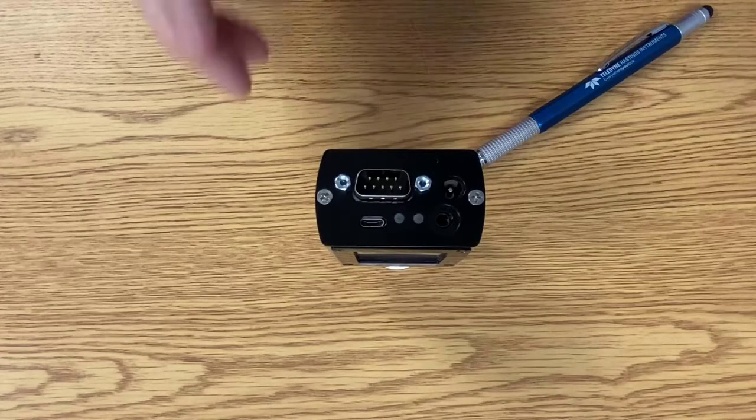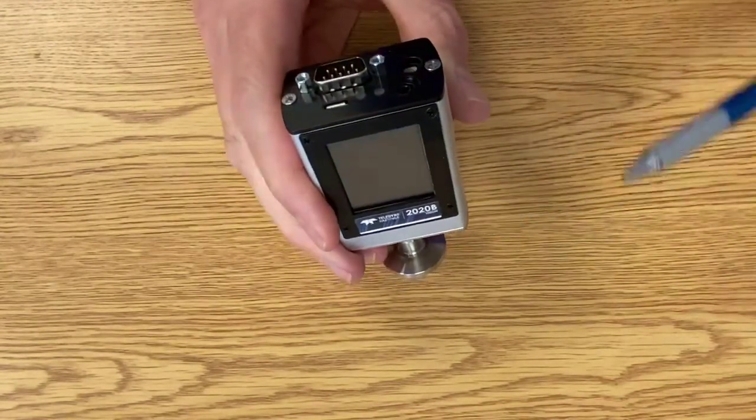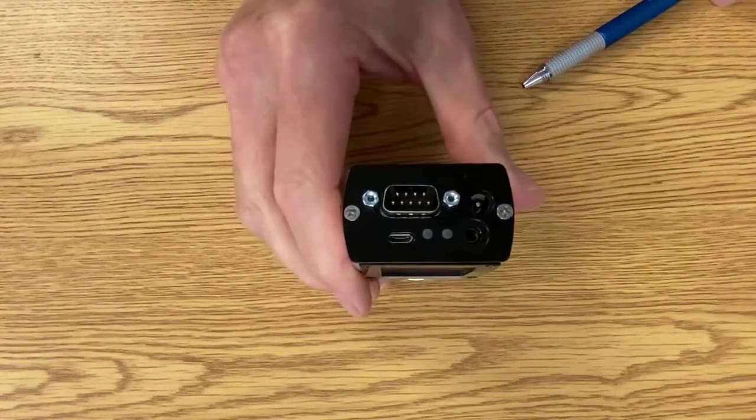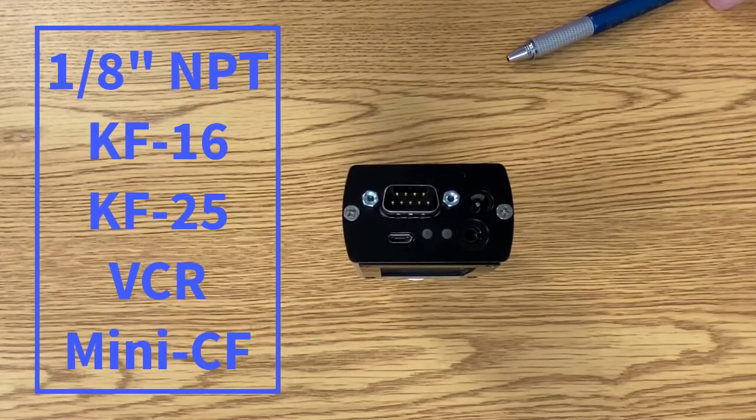So, this model has been built with a KF-16 flange, but we can provide a number of different system connections, including 1/8-inch NPT, KF-25, 1/4-inch and 1/2-inch VCR, and MINI CONFLAT.